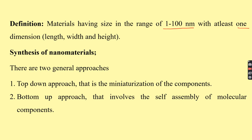Their size should be in the nanoscale, between 1 to 100 nanometers in at least one dimension. These nanomaterials may exist in tube form, rod form, or fiber form. Their physicochemical properties are entirely different from those of the bulk material. For example, gold nanoparticles have properties entirely different from bulk gold.